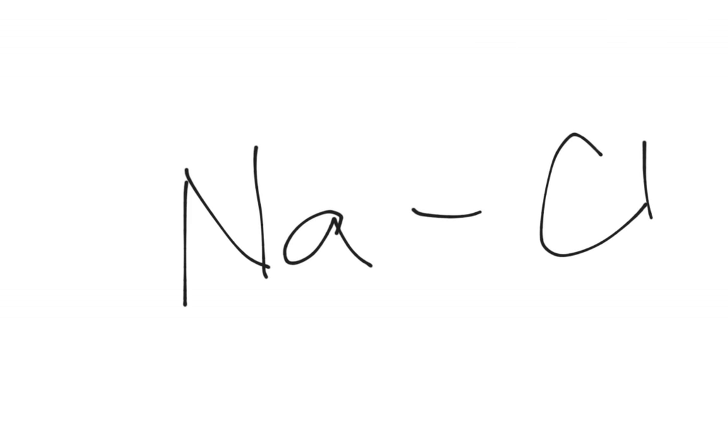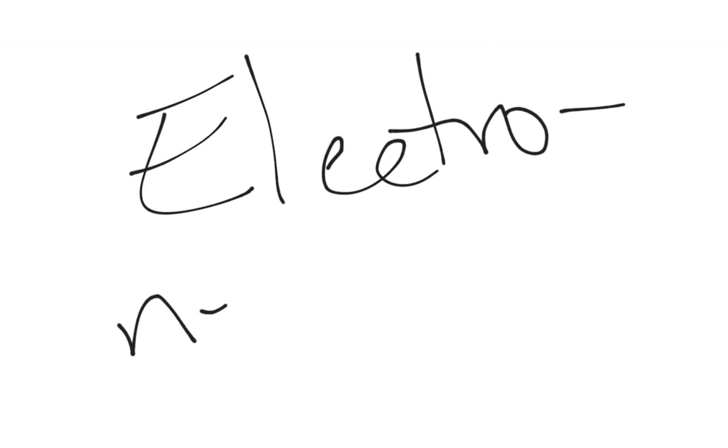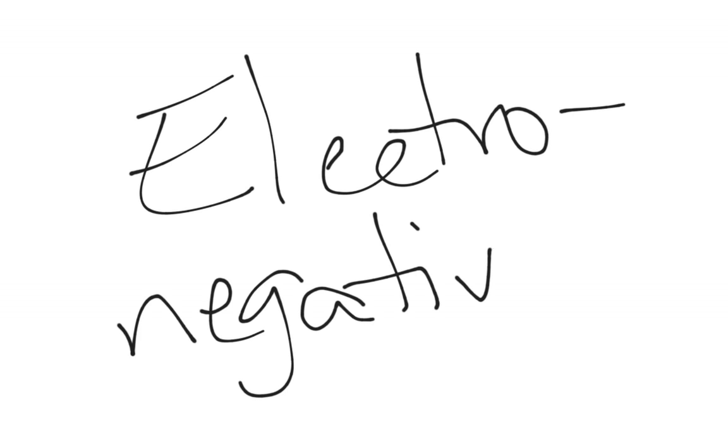You can have something like Na bonding with Cl, and the same thing — they are sharing those two electrons. However you want to draw that, it means the exact same thing. But there is a difference in how they share those electrons, especially with the two examples I gave you, the C-C and the NaCl. That difference comes from the electronegativity of atoms.